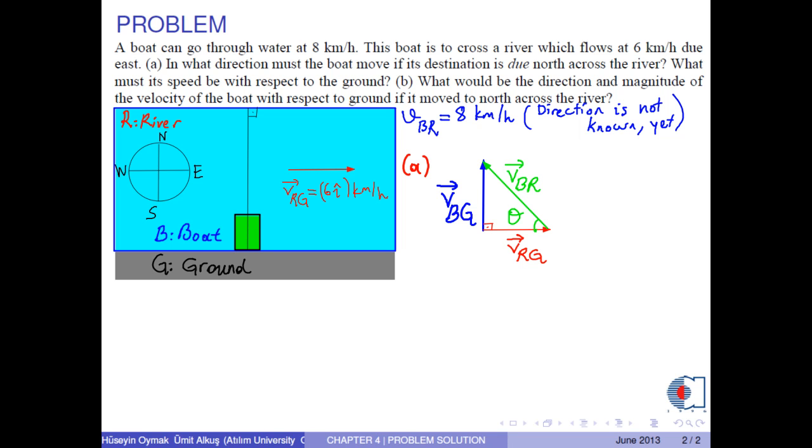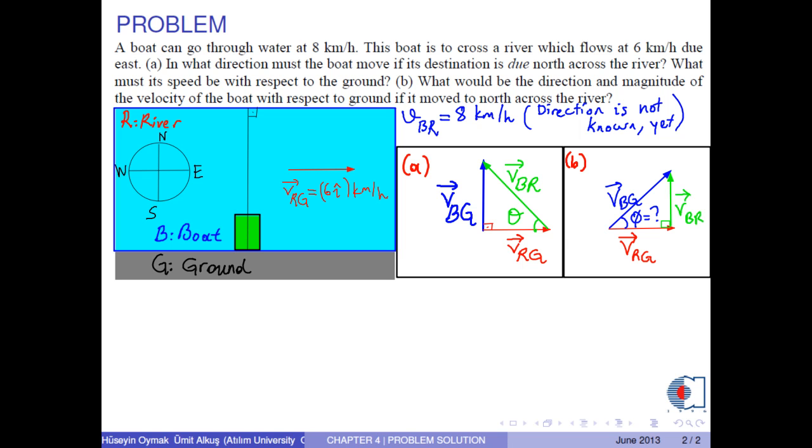What must its speed be with respect to the ground? What would be the direction and magnitude of the velocity of the boat with respect to the ground if it moved to north across the river?